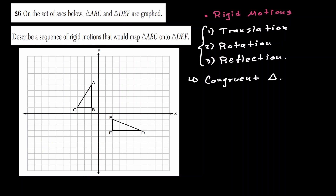Because they're congruent, let me start identifying corresponding parts. The first letter in our congruence statement will be congruent to the first letter in the other statement. So angle A, after these rigid motions, should land on angle D. Angle B should land on angle E. And angle C should land on the last letter, angle F.